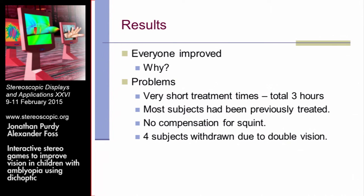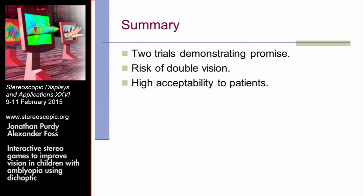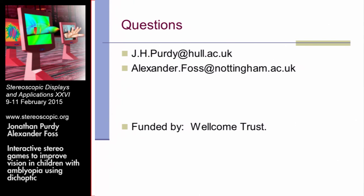The treatment trials were very short because they had to be conducted in the hospital, so we need a method of increasing treatment time going forward. Notably, the vast majority of the 75 patients had previously been treated for amblyopia and had not responded well to patching and other methods — so we were already working with a subset that responded badly to traditional treatment, and there was no compensation for squints. Four subjects withdrew due to developing double vision during treatment, so it was not completely risk-free. In summary: two trials demonstrating real promise, with a risk of double vision, but very encouraging results. We have funding to develop this further and address the remaining questions.